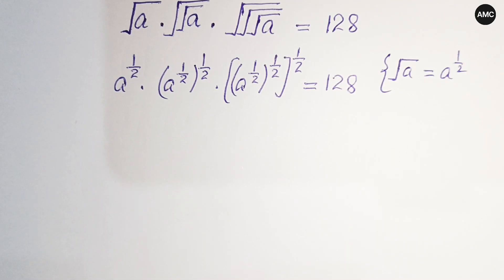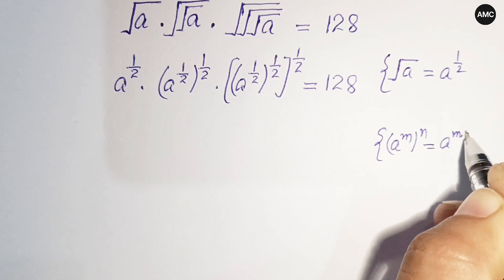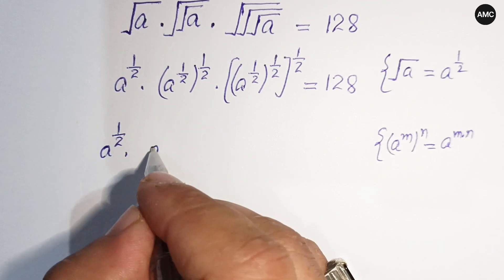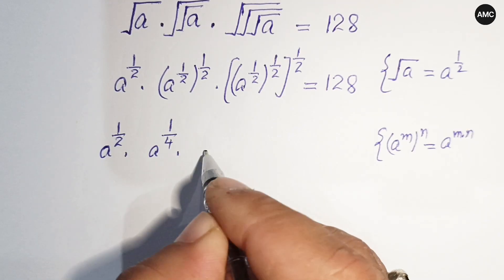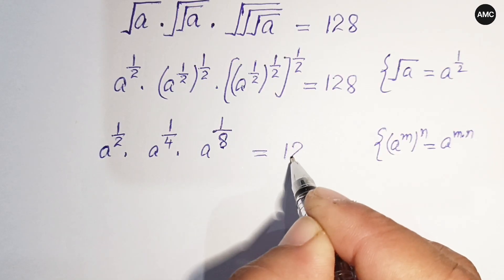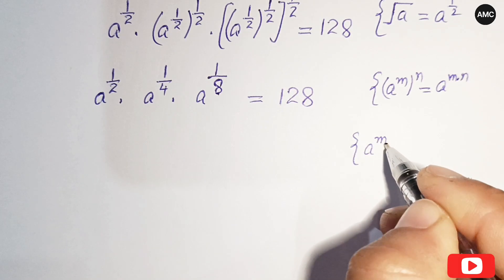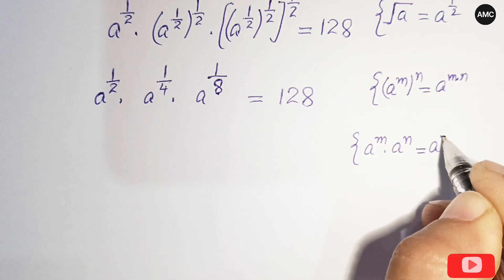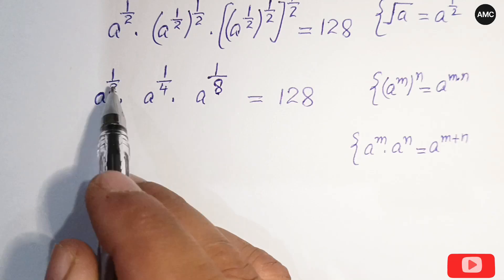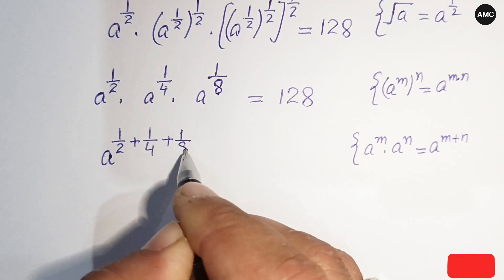Using the property (a^m)^n = a^(m×n), the first term is a^(1/2). The second term: 1/2 times 1/2 gives a^(1/4). The third term: 1/2 times 1/2 times 1/2 gives a^(1/8). Using a^m times a^n = a^(m+n), the left side becomes a to the power (1/2 + 1/4 + 1/8) equals 128.